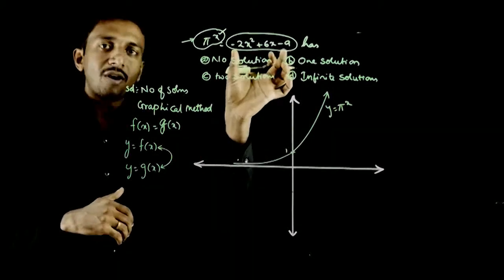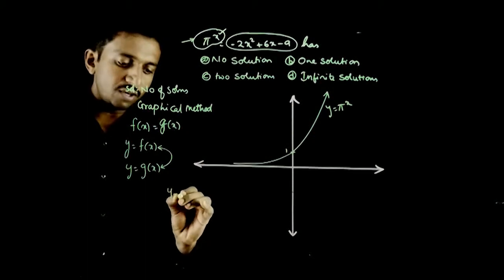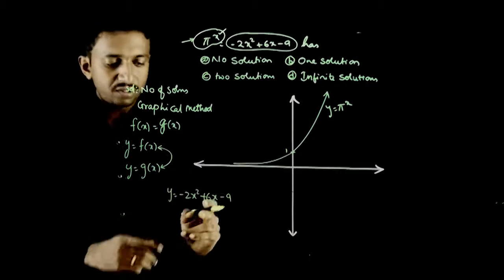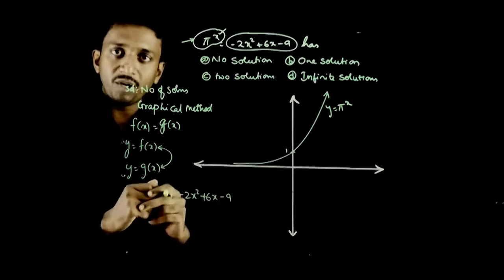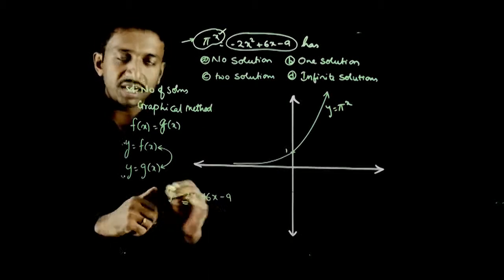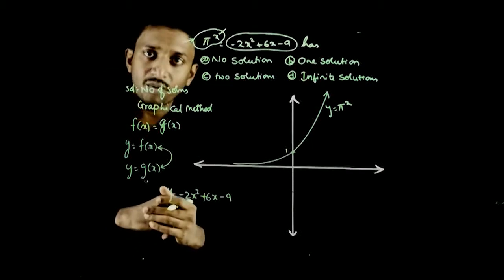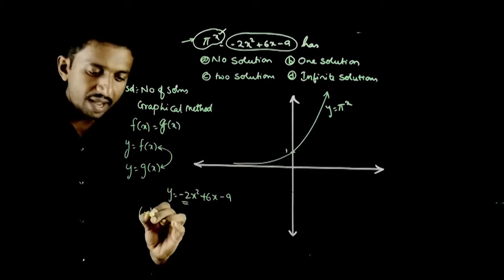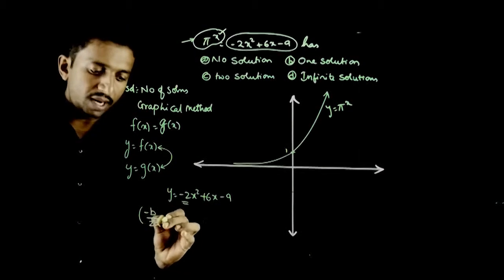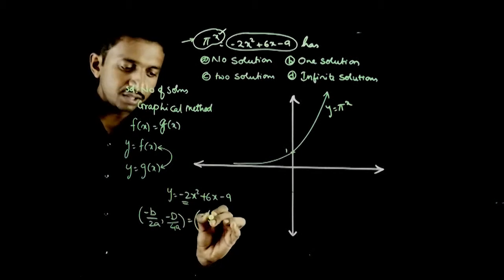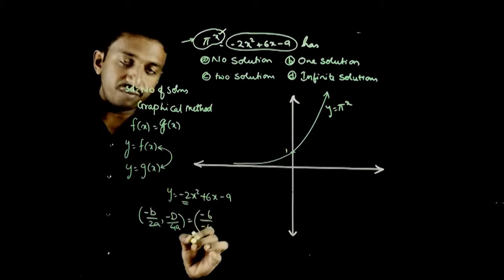Now let us try to draw the graph of y = -2x² + 6x - 9. We know that this is a downward parabola because the leading coefficient is negative. And what are the coordinates of vertex? Vertex coordinates are -b/2a and -D/4a. That equals -6/-4...